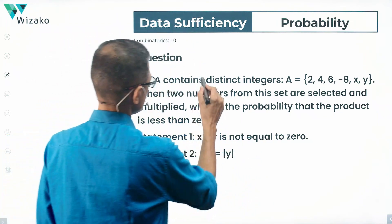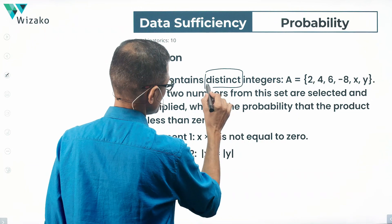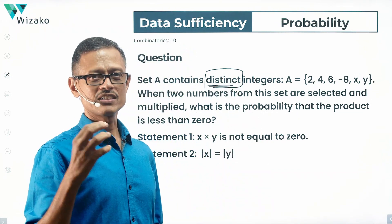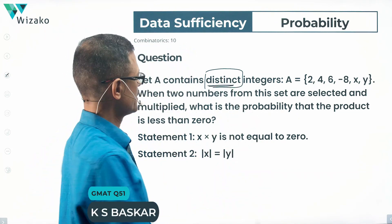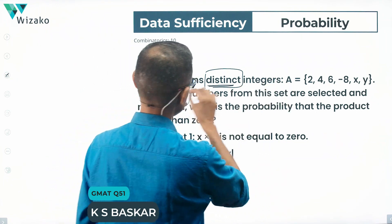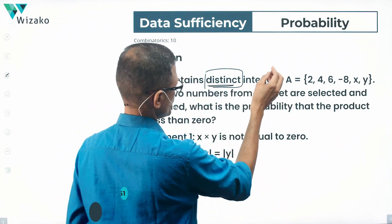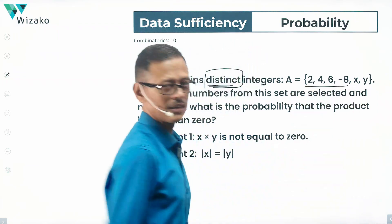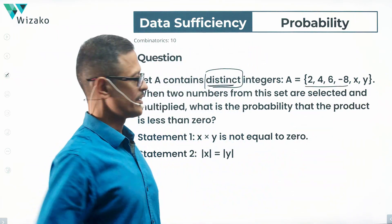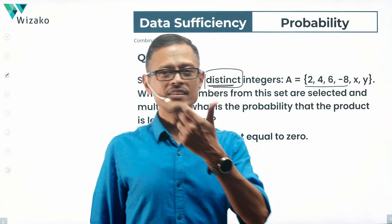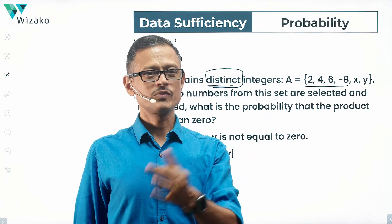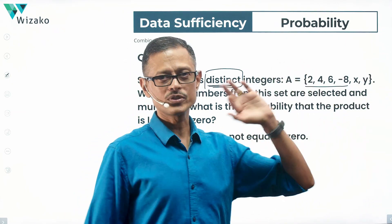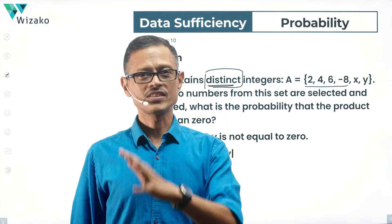Set A contains distinct integers. The word 'distinct' is very important in this question. Set A comprises 2, 4, 6, -8 — obviously these four are all distinct integers — and then X and Y. X and Y are distinct, which means they are not equal to each other, not equal to 2, 4, 6, or -8, and they are integers.